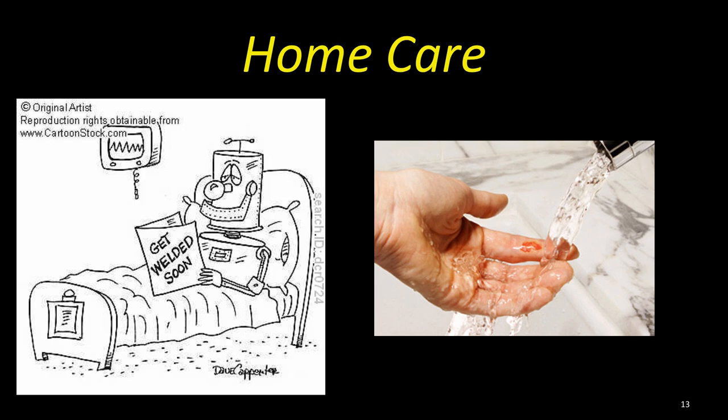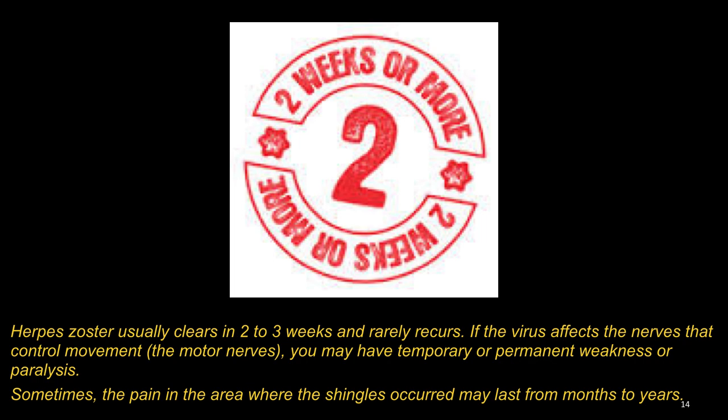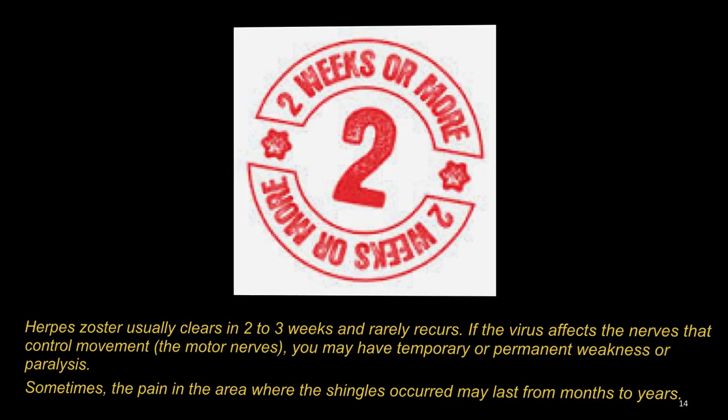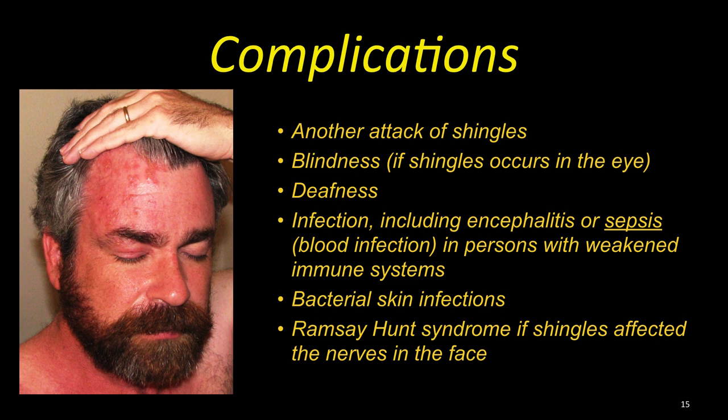Herpes zoster usually clears in 2-3 weeks and rarely recurs. If the virus affects the nerves that control movement, the motor nerves, you may have temporary or permanent weakness or paralysis. Sometimes the pain in the area where shingles occurred may last from months to years. This is called post-herpetic neuralgia. Make sure you watch my video about that complication.